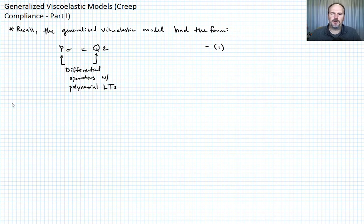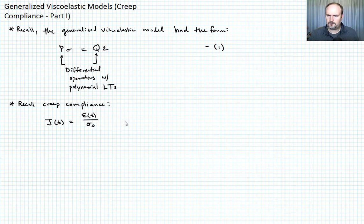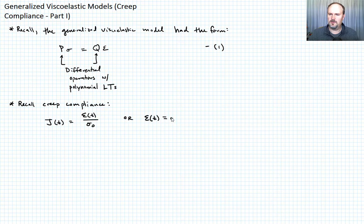Let's also recall the creep compliance, since that's the topic of this lecture. Creep compliance J as a function of T equals epsilon as a function of T divided by sigma naught. Or we could write that epsilon of T is equal to sigma naught times the creep compliance J of T. Call that equation two.